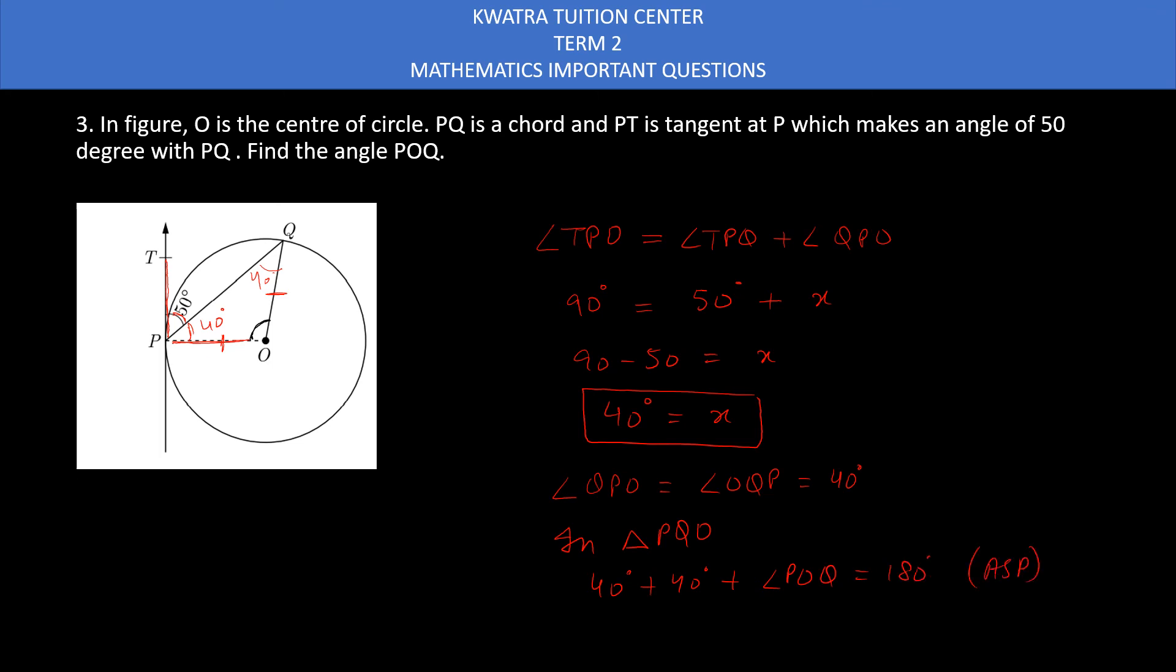Now you can see that 40 plus 40 will give you 80, and you can take it to the right side, so it will be 180 minus 80 is equal to 100 degree. So yes, this is your answer for third one. Now moving to the fourth question.